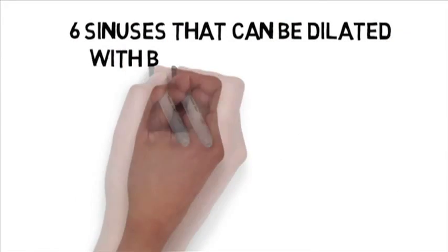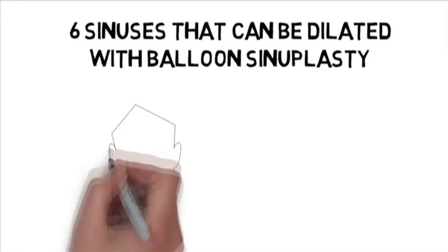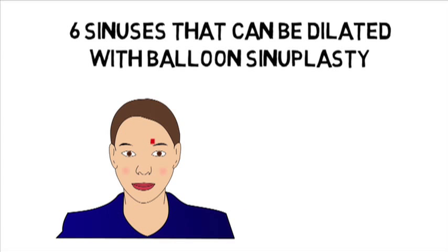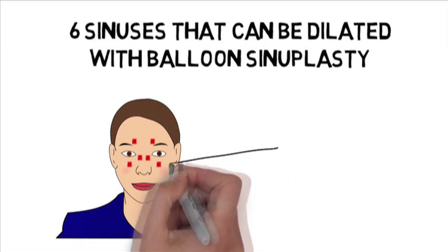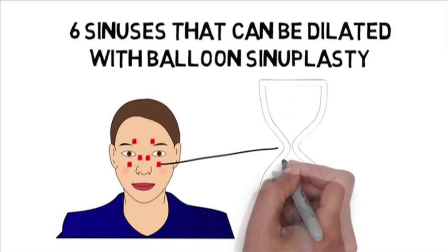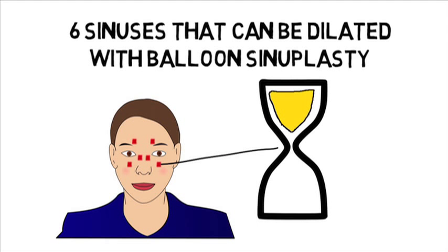There are six sinuses that can be dilated with balloon sinuplasty. All of them are more or less shaped like an hourglass. Usually we find a backup of mucus at the bottleneck.